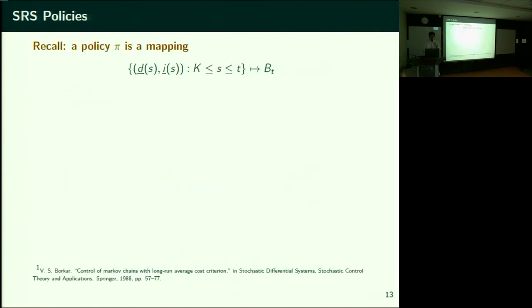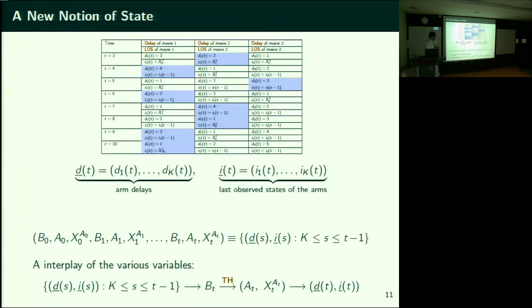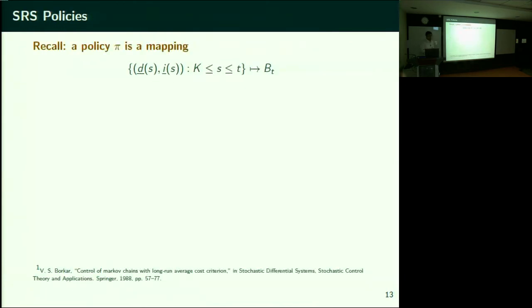If I specify this nice relationship, in order to specify a policy all I need to do is specify this transition — given the current state, how do I select the next action. If I specify that, everything else is taken care of. So we look at a class of stationary policies.